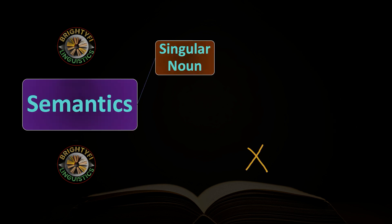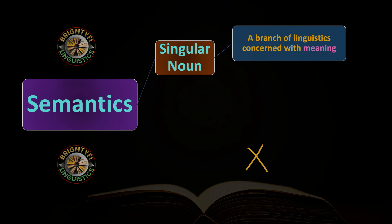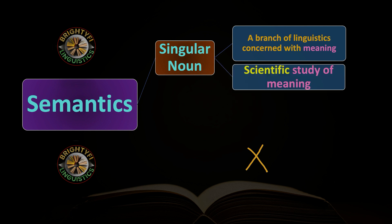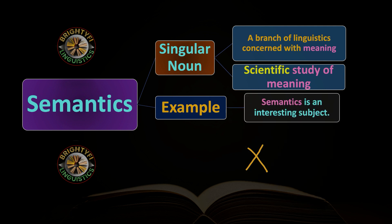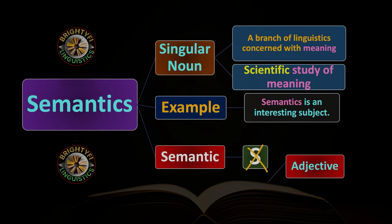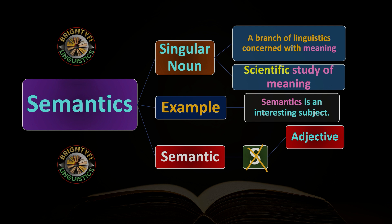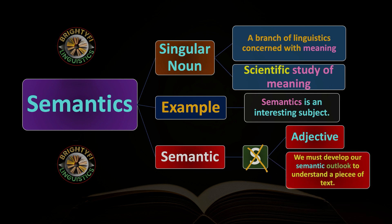Semantics is a singular noun referring to a branch of linguistics concerned with meaning — the scientific study of meaning. The final S is important, signifying it is a discipline or science. For example: 'Semantics is an interesting subject.' The adjective form is 'semantic' (without S): 'We must develop our semantic outlook to understand a piece of text,' where 'semantic' functions as an adjective modifying a noun.